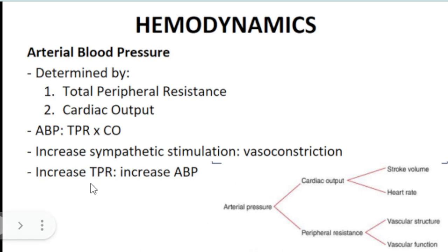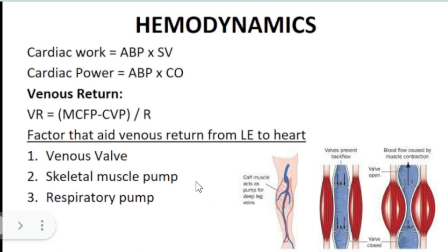Additional formulas: cardiac work is the effort of the heart per contraction, calculated as arterial blood pressure (ABP) × stroke volume. Cardiac power is the effort per unit time, calculated as ABP × cardiac output.